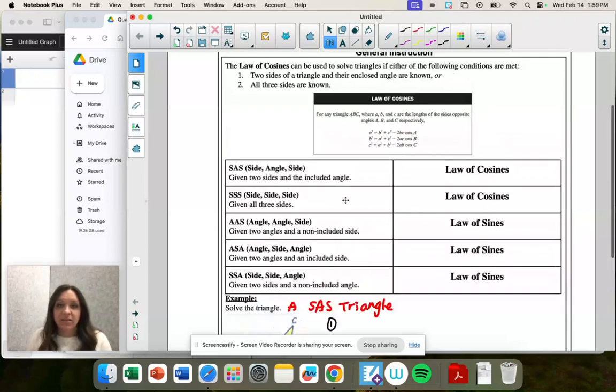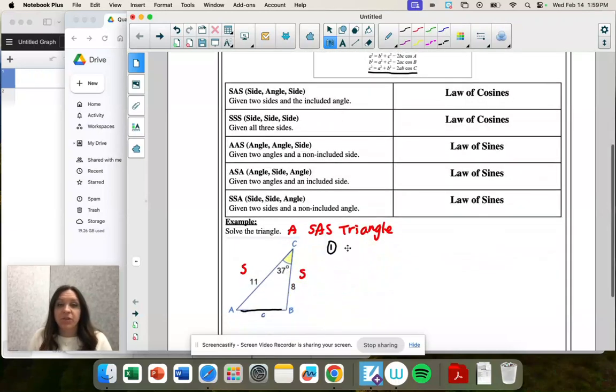So I want side C. So look at these three options. Notice how that one has side C equals. That's the one we're going to pick. So we're going to use C squared equals A squared plus B squared minus 2AB times cosine of C. I just copied that. And we're going to plug in everything.